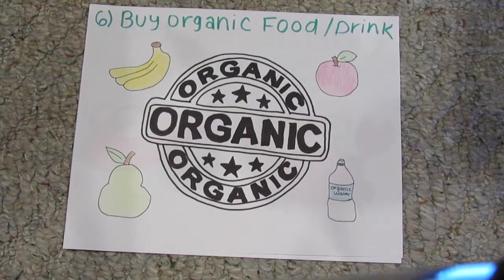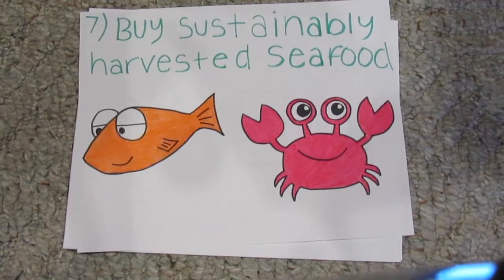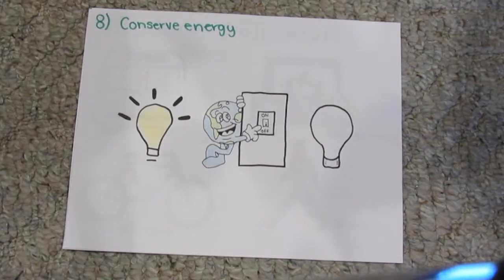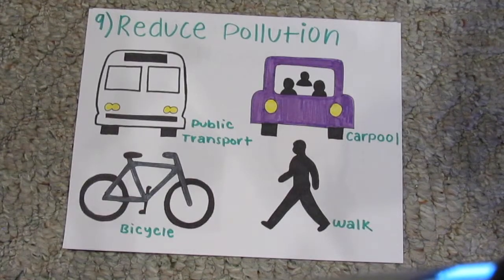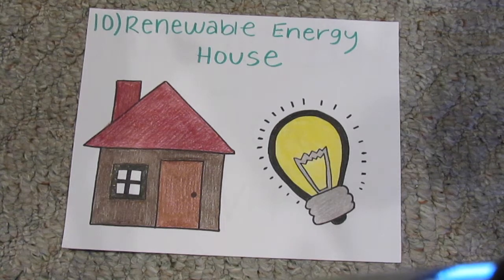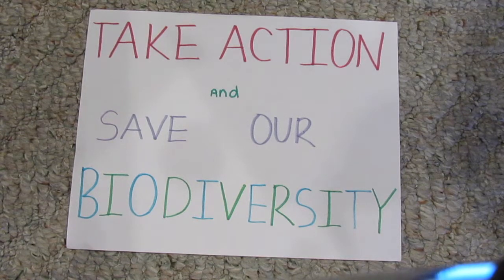Buy local organic food and drinks. Buy sustainably harvested seafood, which avoids by-catch of other species. Conserve energy in your home. Reduce single-person car use — carpools, public transport, walking, and biking are also options. When choosing a home to buy or rent, choose one with renewable energy and energy efficiency. Doing these 10 things, or even a couple, will save our biodiversity. Thanks for listening, and I hope you take action and save our biodiversity.